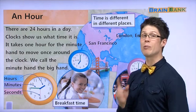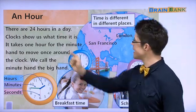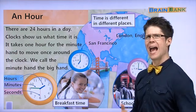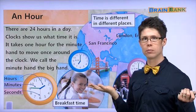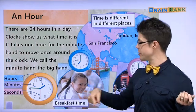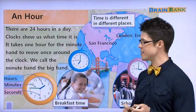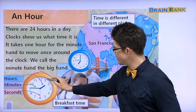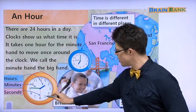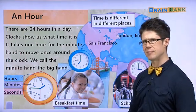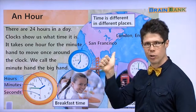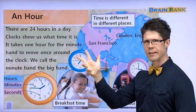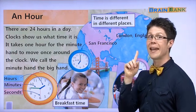Now we will talk about an hour — 한 시간요. How can you see an hour? You can see it with a clock. This is a clock, and we can see the hours with a clock. We already talked about a year, a month, a week, and a day. Let's find out about an hour.